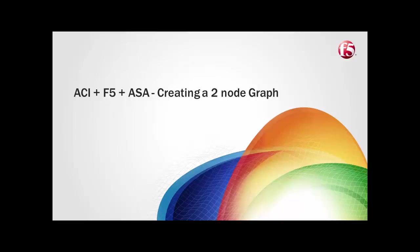In this video, we will be going through the service insertion process in ACI of a two-node service graph. The two-node service graph would consist of an ASA firewall and an F5 ADC.